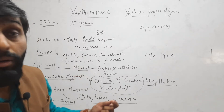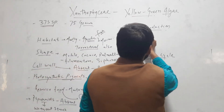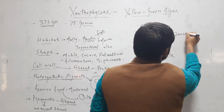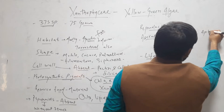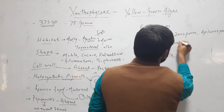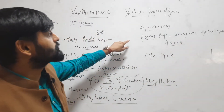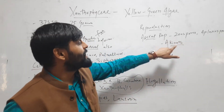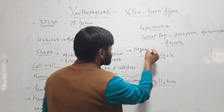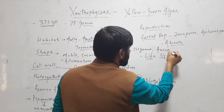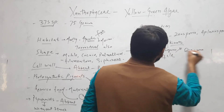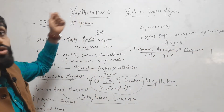When we talk about reproduction, asexual reproduction occurs by zoospores, aplanospores, and akinetes. Sexual reproduction is isogamous, anisogamous, and oogamous — so all three types of sexual reproduction are found in Xanthophyceae.